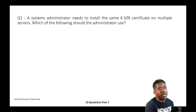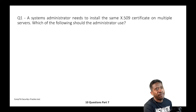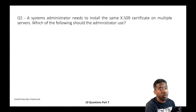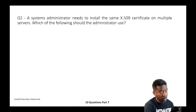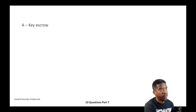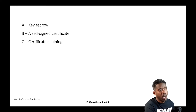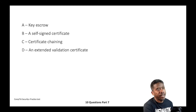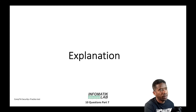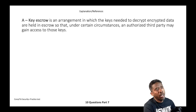Question one: A system administrator needs to install the same x.509 certificate on multiple servers. Which of the following should the administrator use? The choices are: A) Key escrow, B) Self-signed certificate, C) Certificate chaining, or D) Extended validation certificate.